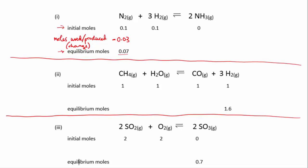So if we know that 0.03 moles of nitrogen were used, then we also know that three times that, which would be 0.09 moles of hydrogen, must have been used. So the moles of hydrogen left at equilibrium is 0.1 minus 0.09, which gives us 0.01.